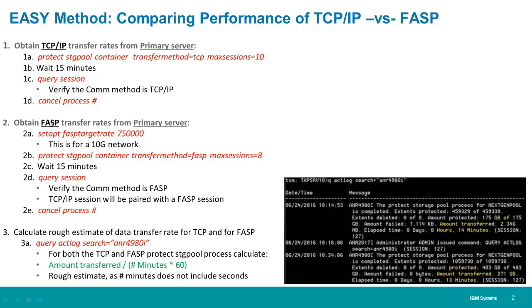Next, we're going to run the same process but use FASP. Prior to using FASP, we want to open up the throttle for the FASP transfer. Issue the SetOp FASP target rate 750,000 — this is for a 10 gig network — which will open the throttle for each session to 750,000 kilobits. We then issue Protect Storage Pool, container, transfer method equals FASP, and max sessions equals 8. Wait about 15 minutes, issue a query session, and verify that you have the TCP IP sessions paired with your FASP sessions. The server chatter between source and target will go over TCP IP, and FASP will be used for the actual data transfer. Then cancel that Protect Storage Pool command.